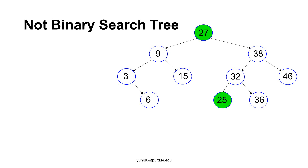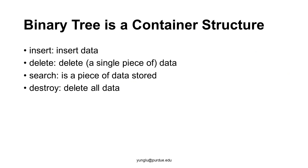Next, we consider a case that is not a binary search tree. In this example, 25 is in the right subtree of node 27. Since 25 is smaller than 27, it should be in the left subtree. This is another example that violates the binary search tree property: the left child of node 30 is 32, but since 32 is greater than 30, it should not be in the left subtree. A binary search tree, like a linked list, is a container structure.